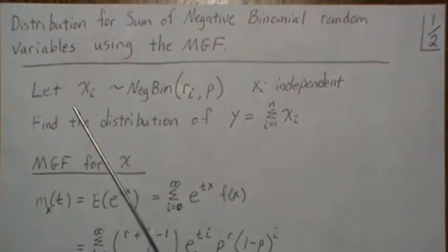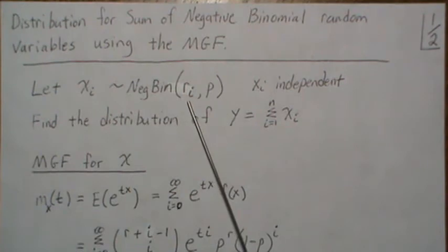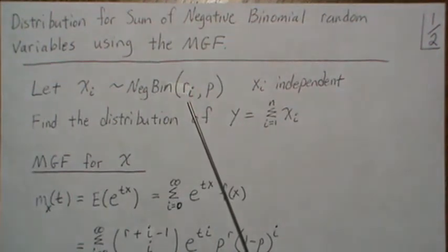So what that means is we're going to let Xi be negative binomial, RiP as the parameters. P is the probability of an event, Ri is the number of events that we want to see and then we stop.